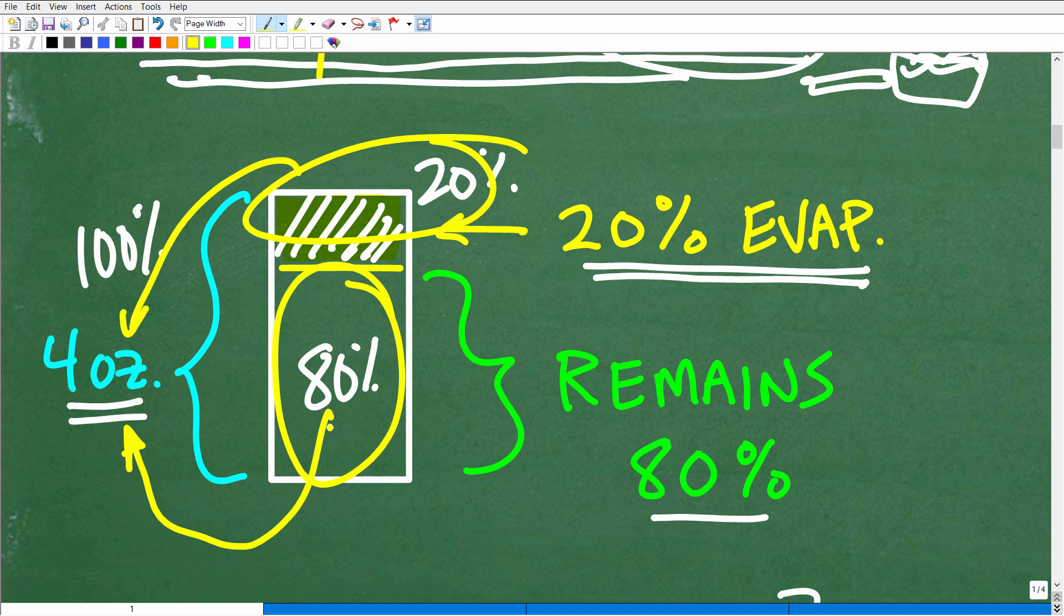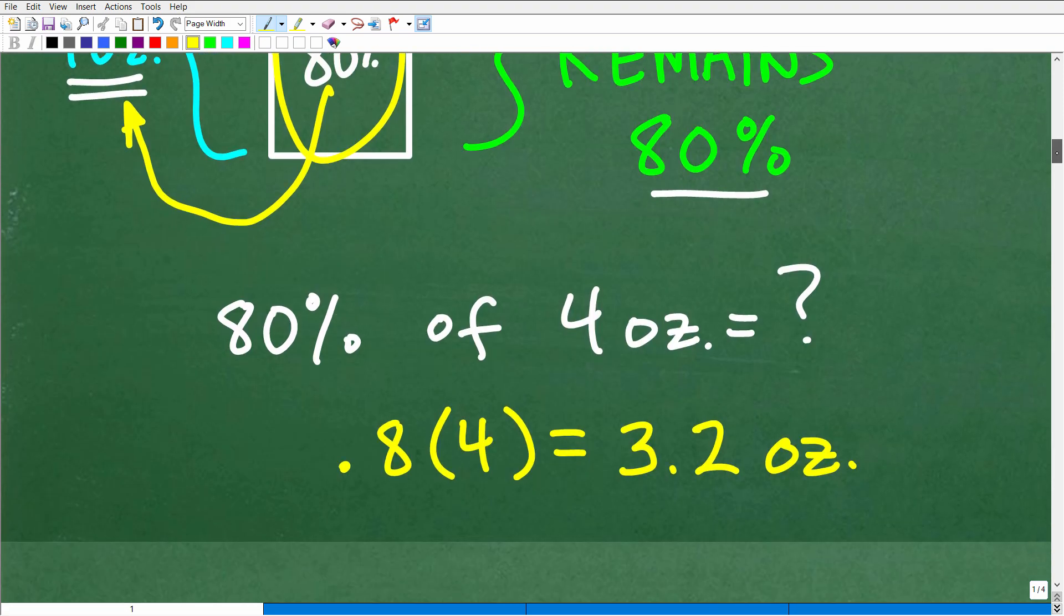Now you could do this and subtract it away from four ounces, right? But an easy way to do that is just take 80% of that four ounces.